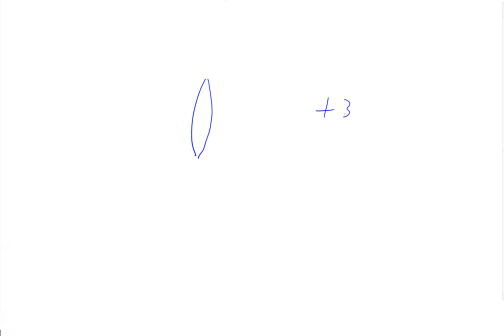Surprise, surprise. So we can have a lens that's a plus three diopter lens, or a plus 5.5 diopter lens, or a minus 250 diopter lens. The power of the lens is measured in diopters.